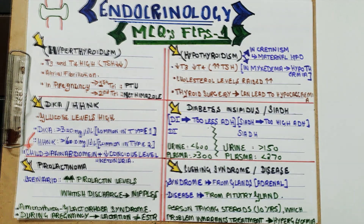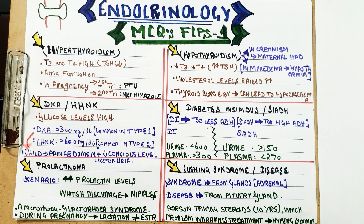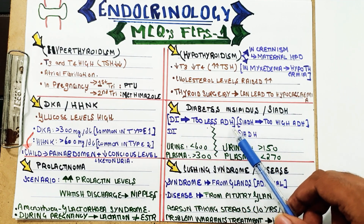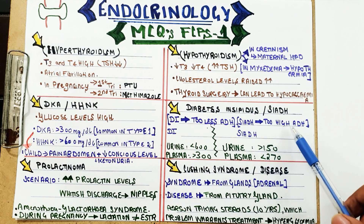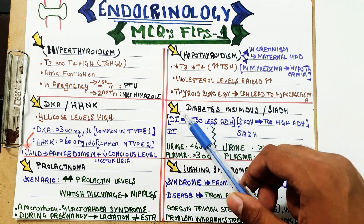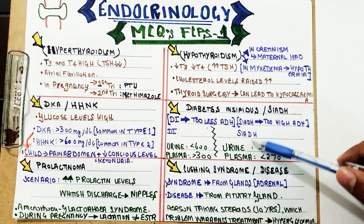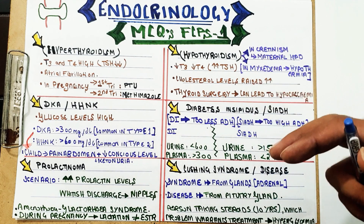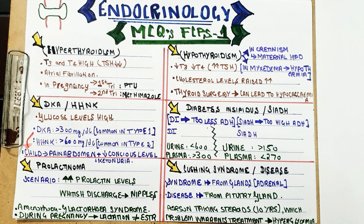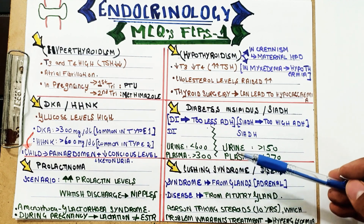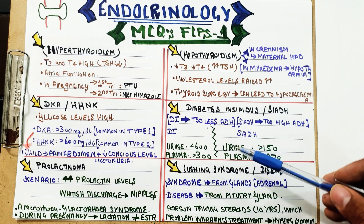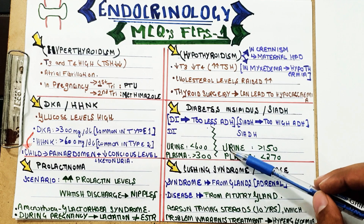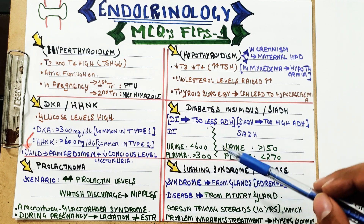In diabetes insipidus (DI), too little ADH is produced, whereas in SIADH too much ADH is produced — these are opposite conditions. ADH's primary function is to absorb water from the nephrons and collecting ducts. You need to keep osmolality values in mind to recognize which scenario is DI versus SIADH.